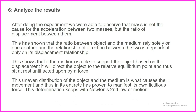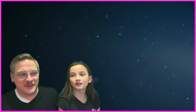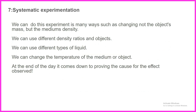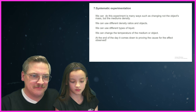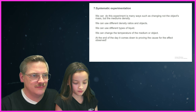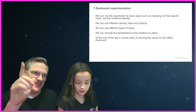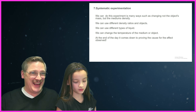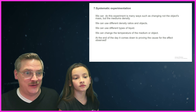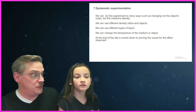Then we move on to analyze the results. After doing the experiment, we were able to observe that mass is not the cause for the acceleration between two masses. He's going to spend some time analyzing the results and coming up with his erroneous conclusions, so we're going to leave him there. Then we move on to systematic experimentation — we can do this experiment in many different ways, such as changing not the object's mass but the medium's density, using different density ratios and objects, different types of liquids, or changing the temperature. Does this float? It doesn't look like it — it doesn't have air bubbles, and it's kind of hard.